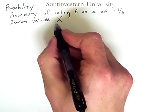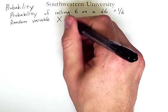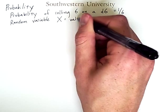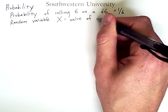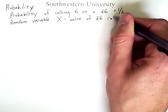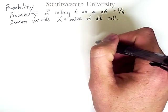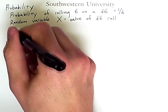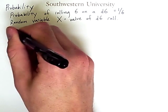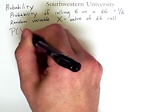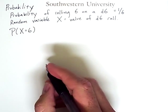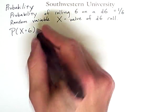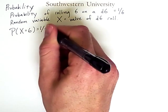Specifically, this random variable X is the value of rolling a D6. Now, given that we've defined this random variable, we can ask what the probability is that X will equal 6. And, as we've already indicated here, this equals 1/6.